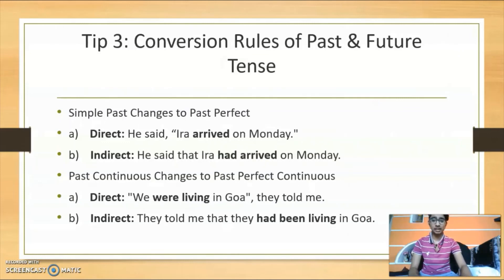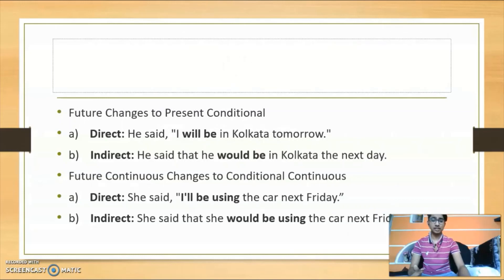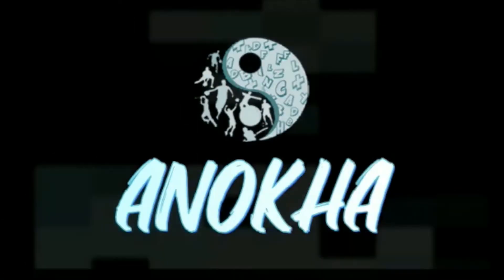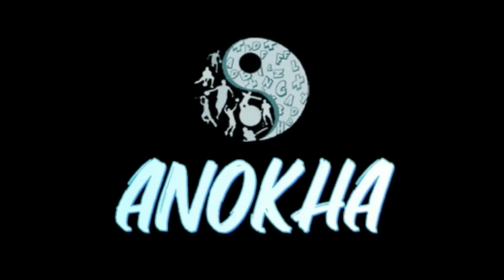To summarize tip three: simple past changes to past perfect, past continuous changes to past perfect continuous, future changes to present conditional, and future continuous changes to conditional continuous.